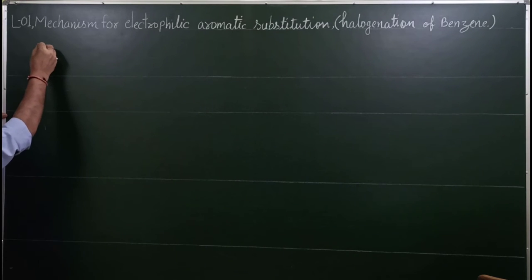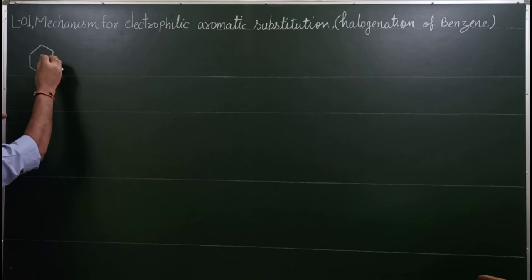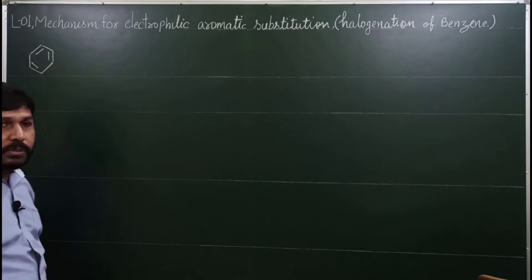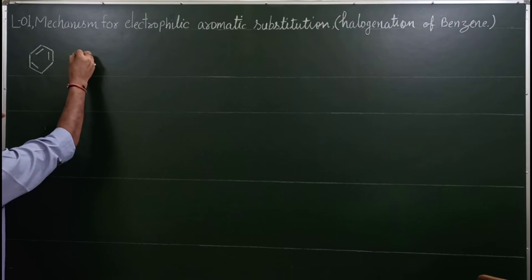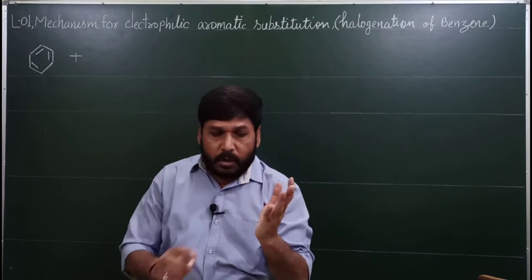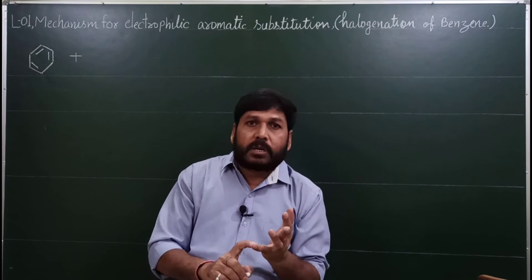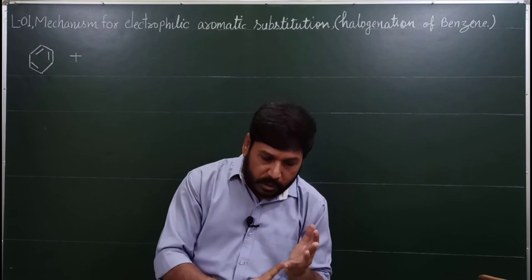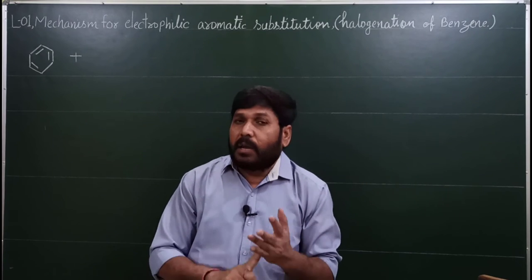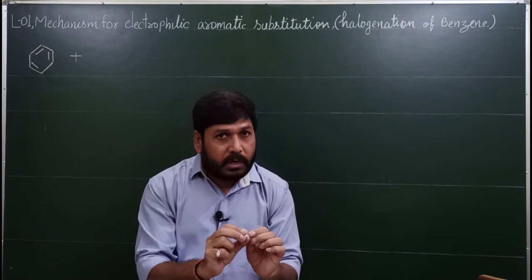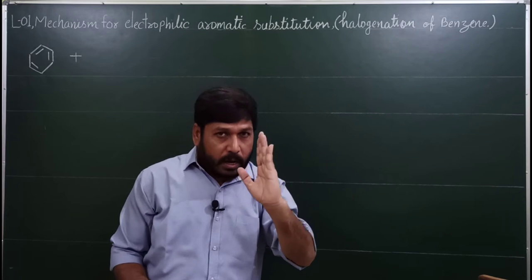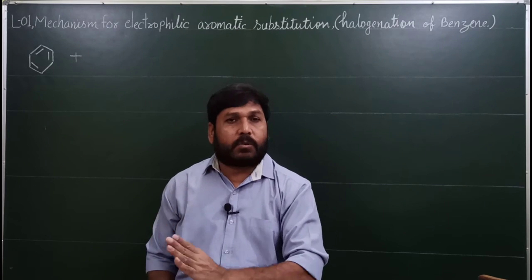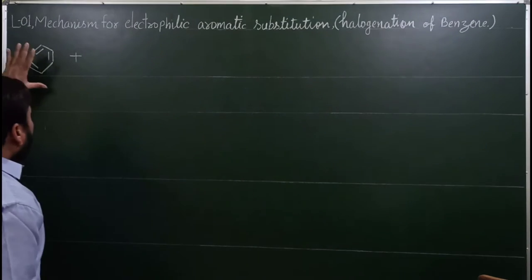पहले एक general reaction को समझ लीजिए — कैसे reaction होती है, किसकी presence में होती है, और क्या बनता है। यहाँ पर Benzene ले रहा हूँ — C6H6, alternate bonds होते हैं, aromatic compound है। Halogenation का मतलब mainly fluorination, chlorination, bromination, iodination। लेकिन इसमें दो convenient हैं — chlorination and bromination। Fluorination और iodination भी होता है, लेकिन उसके लिए special apparatus और special conditions की जरूरत होती है।